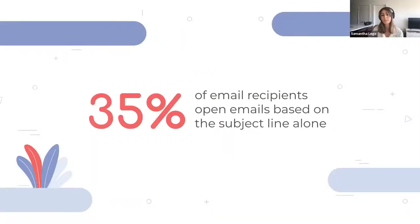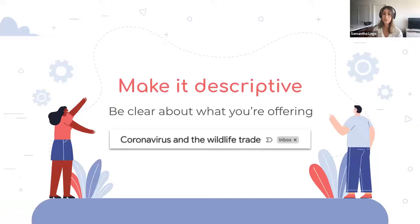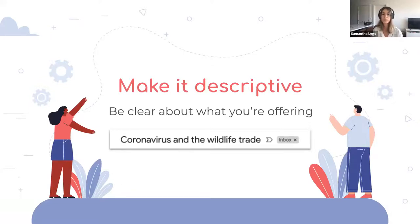35% of email recipients open emails based on the subject line alone. Here are some best practices: first, make it descriptive — be clear about what you're offering. Something that sounds too spammy can actually turn people off. In fact, 69% of email recipients report emails as spam based on the subject line. Be careful with your word choice and avoid all caps, symbols, and trigger words like 'free,' 'buy,' or 'money' — these are automatic red flags for spam filters.